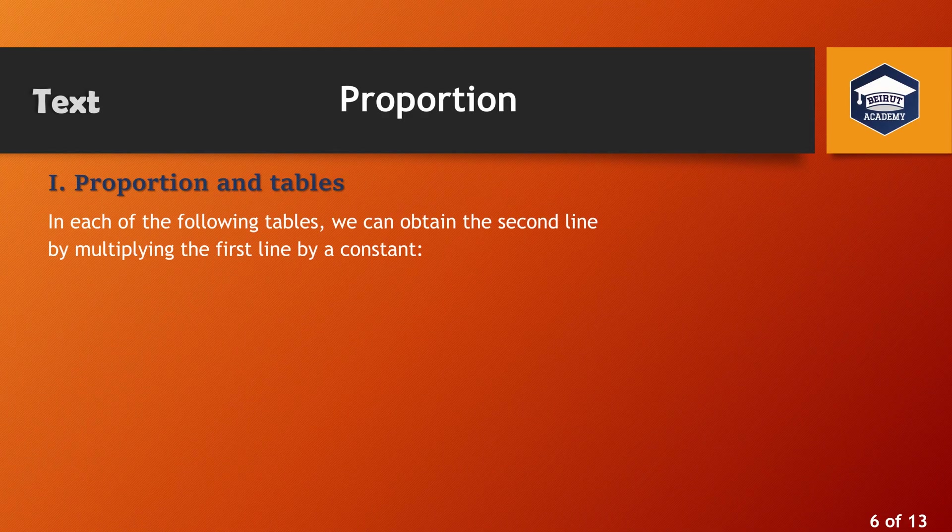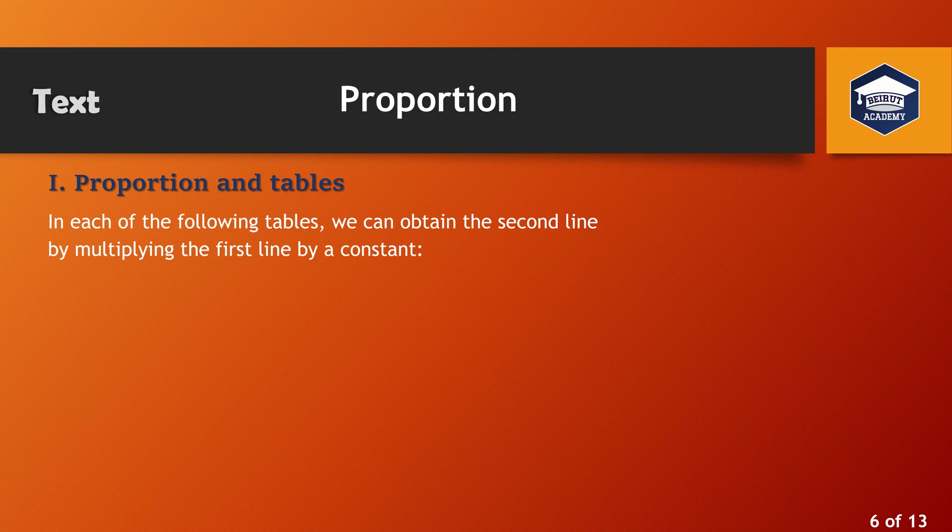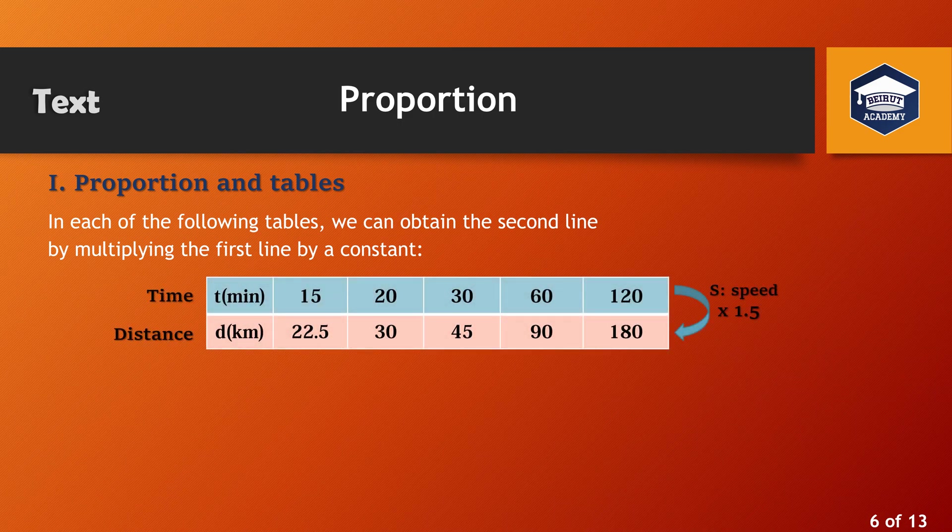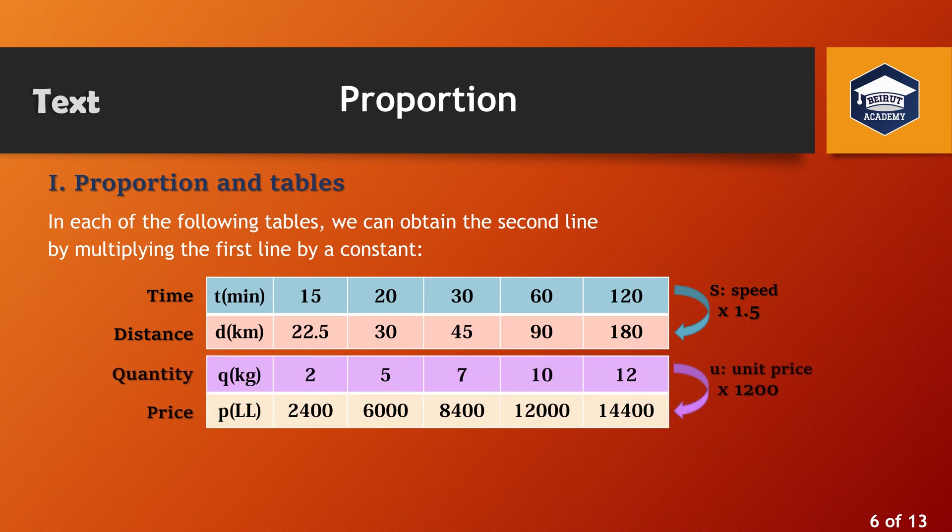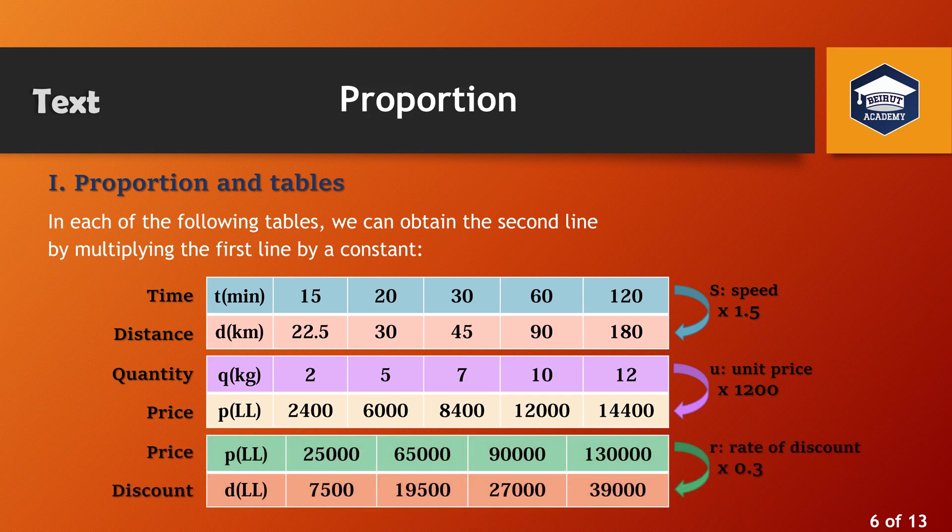Proportion and tables. In each of the following tables, we can obtain the second line by multiplying the first line by a constant. The first table represents a relation between time and distance with a constant speed equals 1.5. The second table represents a relation between quantity and price with a constant ratio of a unit price equals 1200. The third table represents a relation between price and discount with a constant ratio or a rate of discount equals 0.3.